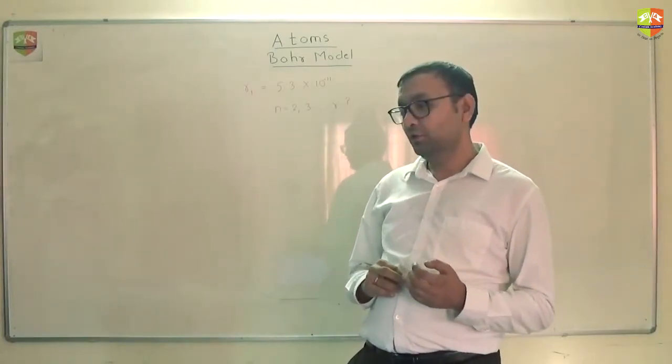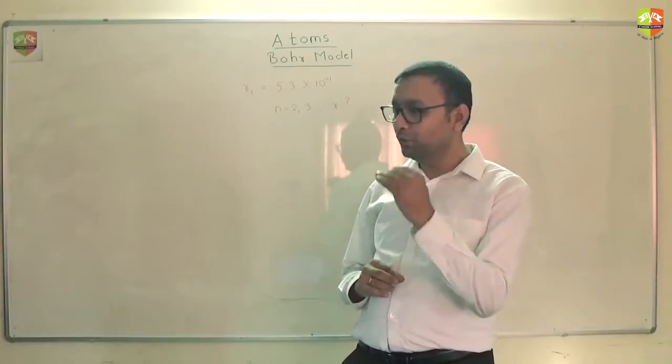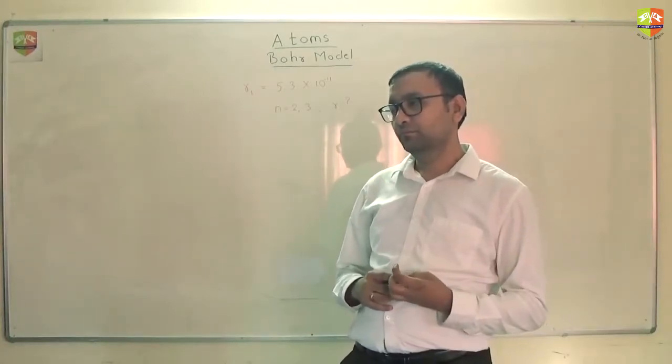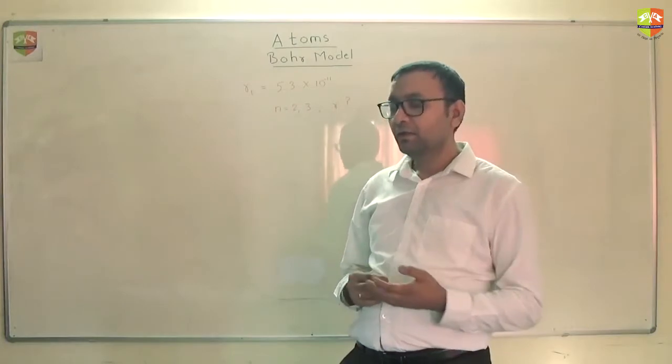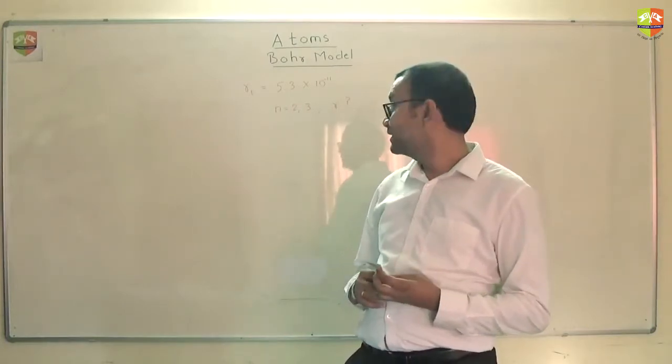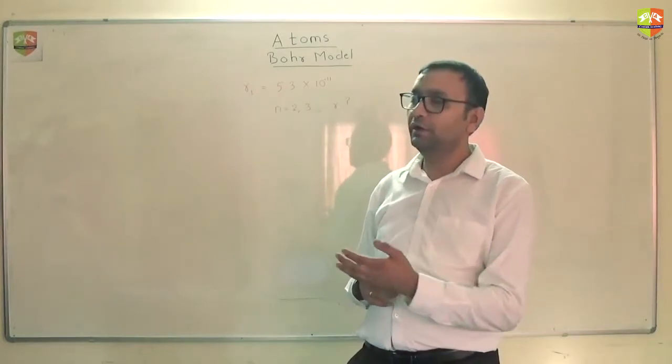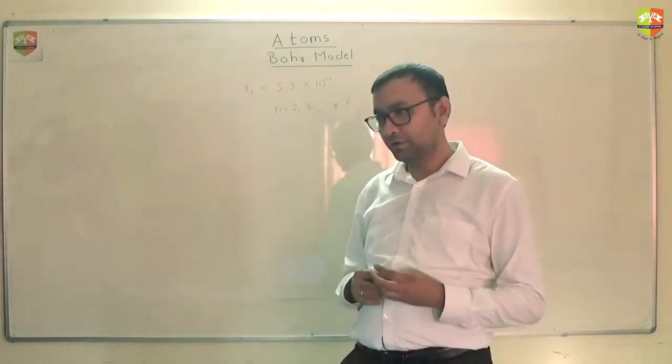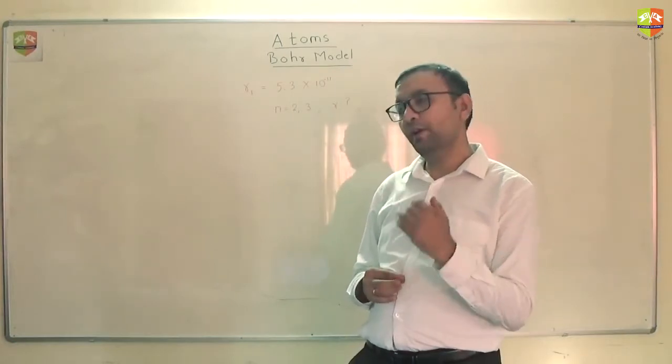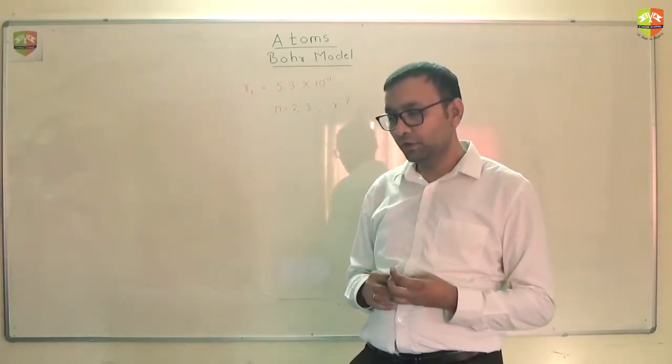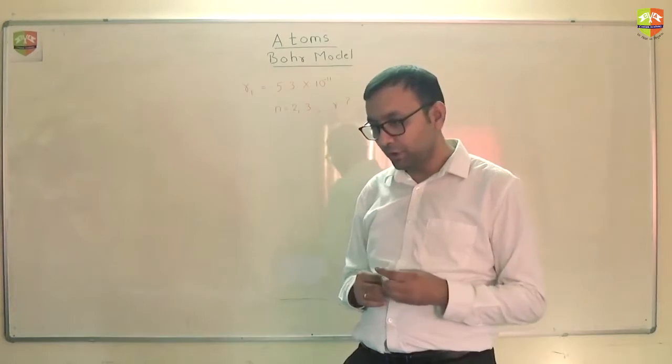R1 is given. So once you get the ratio, the ratio will be only in terms of n. First get the expression. R is proportional to what? 1 by n square or n square? R is proportional to n square. So R1 by R2 will be n1 square by n2 square.